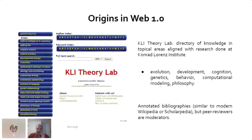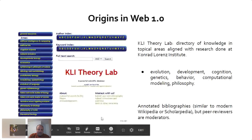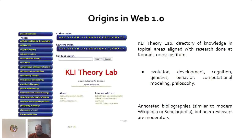Epistemological directories have their origins in Web 1.0, from the late 90s to early 2000s. This is an example of a directory from that era, put together by the Conrad Lorenz Institute — a website where you could learn theoretical concepts across fields like developmental biology, economics, and cognitive science. It presented papers with annotations, but was very static — a predecessor to Wikipedia with an academic field flavor.